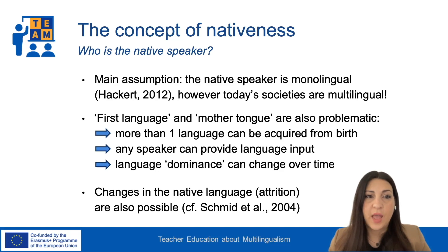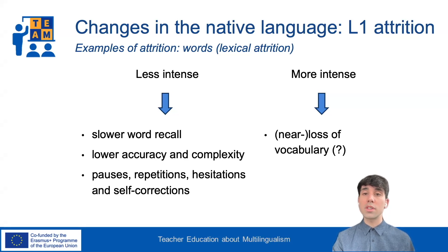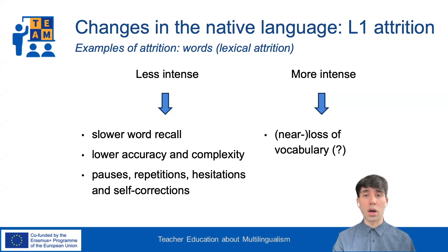This phenomenon is referred to as first language attrition. Lexical attrition can be of varying degrees. Less intense manifestations of lexical attrition range from slower word recall, where speakers may take longer to retrieve a word from their first language, to lower accuracy and complexity, occurring when individuals experience a decreased ability to accurately retrieve words from memory, particularly words that are more complex or nuanced. Pauses, repetitions, hesitations, and self-corrections are also examples of lexical attrition.